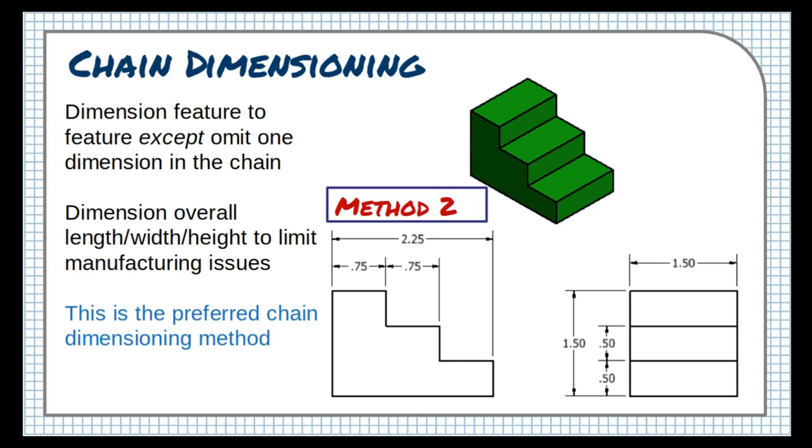That's why we generally use this method for chain dimensioning, in which the overall dimension for a side is given, and then all of the chain distances are given except one. We leave one of the chains off, because if we show them all, we've technically provided the same information in two different ways, breaking one of our basic dimensioning rules.